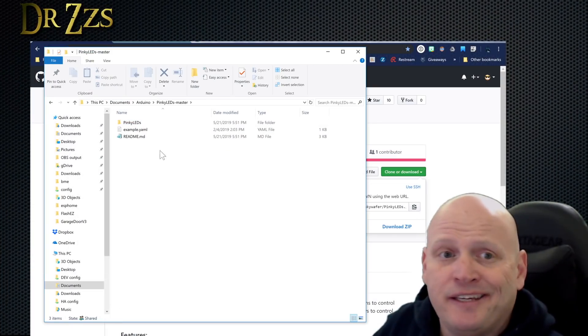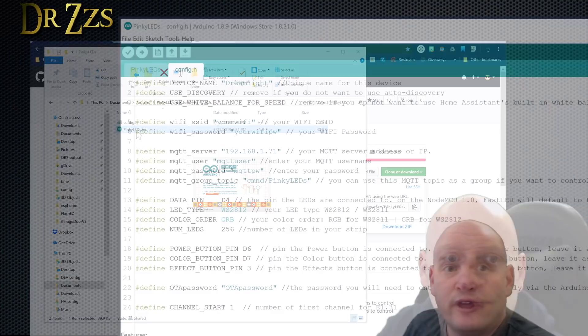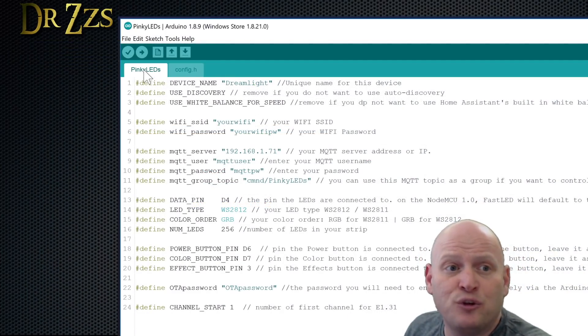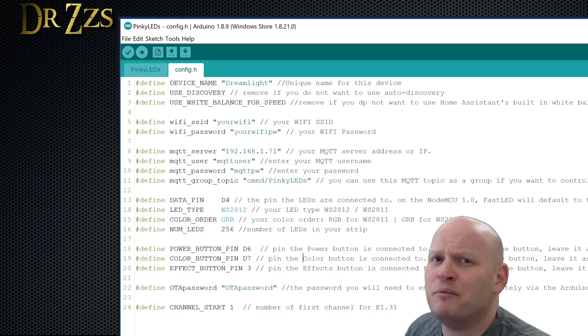To open it up in the IDE, you can just go to the directory, wherever you saved it, and click on this pinkyLEDs.ino file. The pinkyLED sketch has two parts. The pinkyLED tab has a bunch of stuff that controls everything. And unless you want to get in and change the effects, you don't need to do anything here. Where you do need to make changes is in the config.h tab.